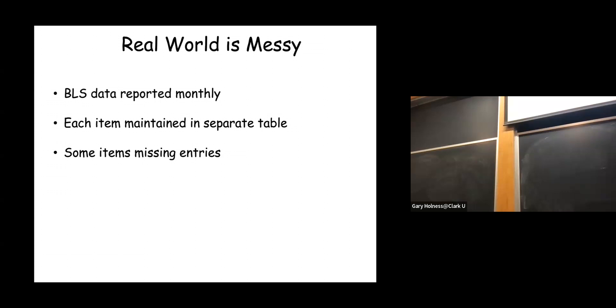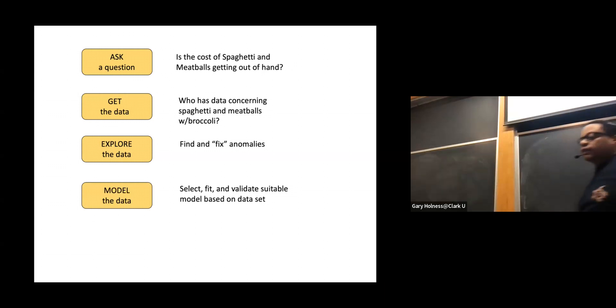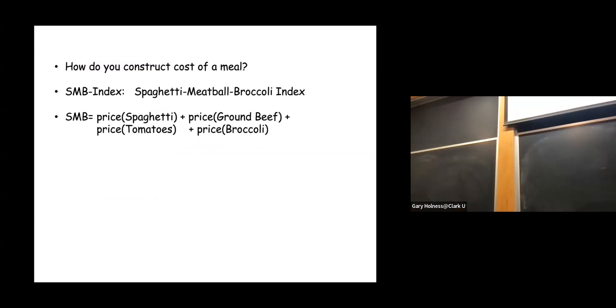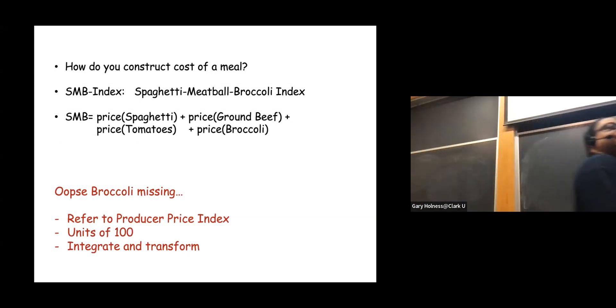And so here it's reported monthly. Each item is maintained in a separate table, it's an Excel table. And some of the items are missing entries. Now, at some point when they're doing the project, they're going to select a model, and I give them a model. And this model is something very simple we call the SMB index, the spaghetti meatball broccoli index. And this is just the price of the primary ingredients for this staple meal. And when they go off and they look for these ingredients, oops, they realize that broccoli is missing for that reporting period. What do they do? They have to find a proxy from it. So they go off and they look for the producer price index. But this is reported in terms of 100 unit and not single unit as the Bureau of Labor and Statistics reports. So they have to transform this. They have to fix that issue so that it matches up with the data that they got from BLS.